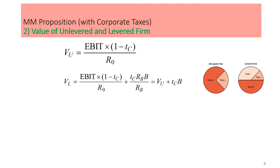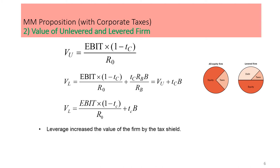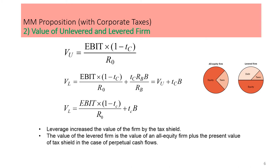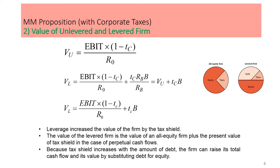The value of the levered firm VL is higher as the firm pays less tax. Leverage increases the value of the firm by the tax shield. The value of the levered firm is the value of an all-equity firm plus the present value of the tax shield in the case of perpetual cash flows. The higher the debt, the higher the value of firm, because the tax shield increases with the amount of debt, and the firm can raise its total cash flow and value by substituting debt for equity.